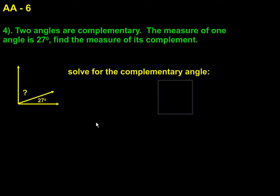For number four, I have two angles are complementary. The measure of one angle is 27 degrees. Find the measure of its complement. Same idea. This is a right angle. I know that because they're complementary. In my sketch, I didn't draw the box, but you could. So if the whole thing has to equal 90, and I have a value of 27, I just simply have to subtract 27 from 90. I get 63, and I can fill in the missing amount. 63 degrees.